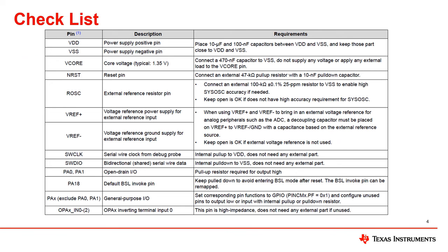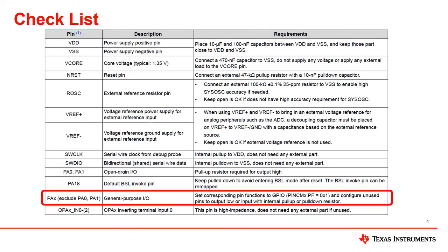Now let's take a look at the hardware design checklist. To reduce power consumption, unused GPIO pins can be configured to output low or input with the internal pull-up or pull-down resistor. The OPA pins are high impedance if unused, so external components are not required.